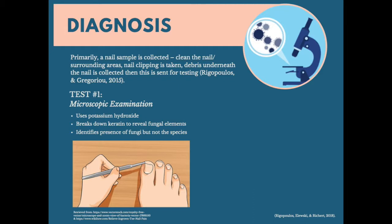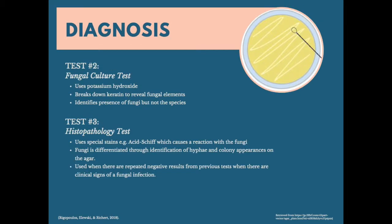This method determines the presence of fungi but does not identify the species, though it is a faster way to initiate treatment. Another method of diagnosis is a fungal culture, which uses SDA agar to isolate the culture and identify the fungi through morphology. This can take up to a month.